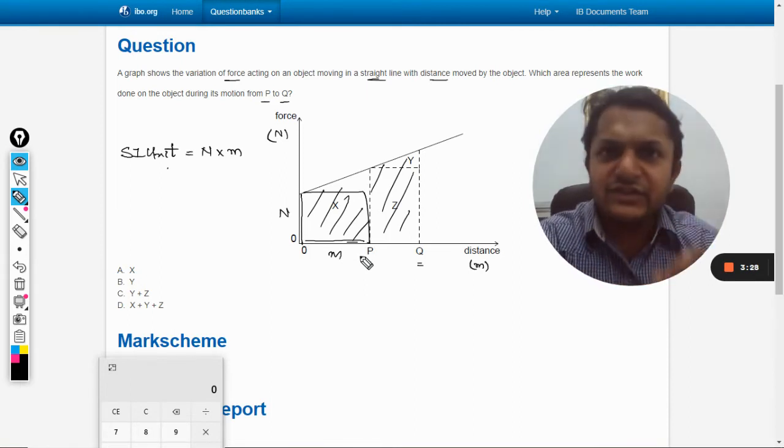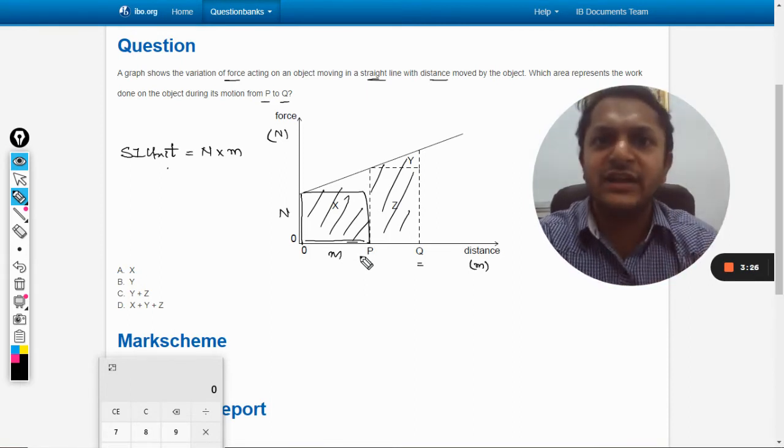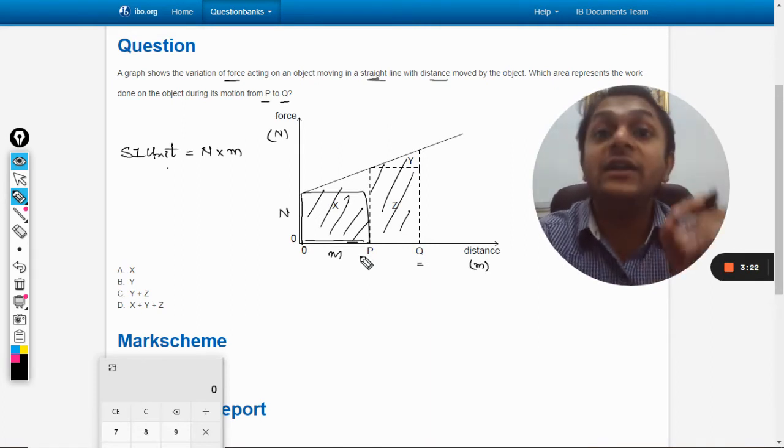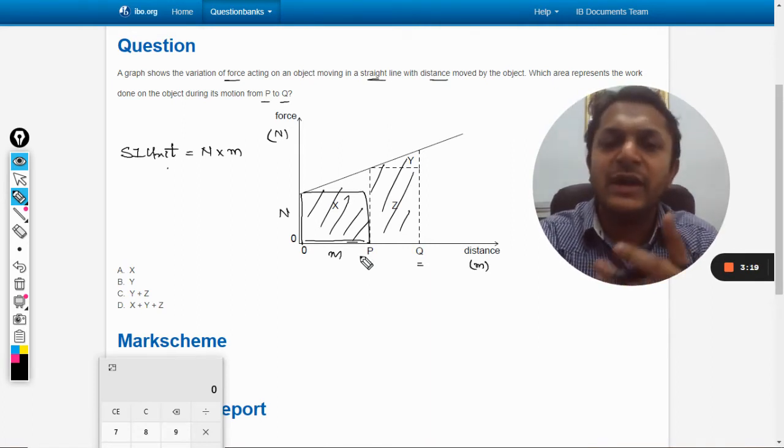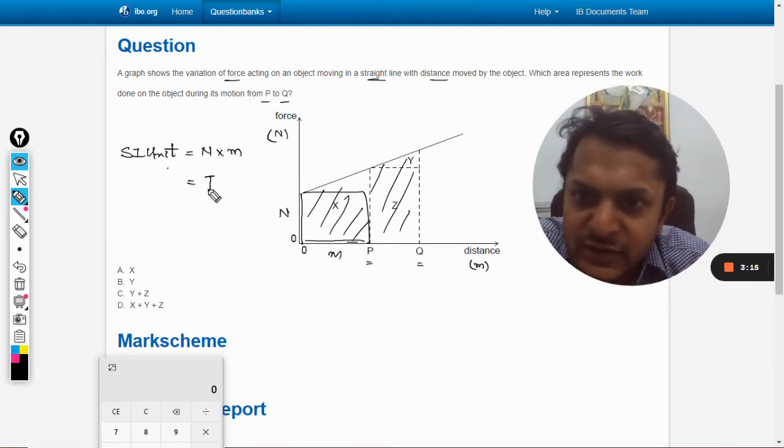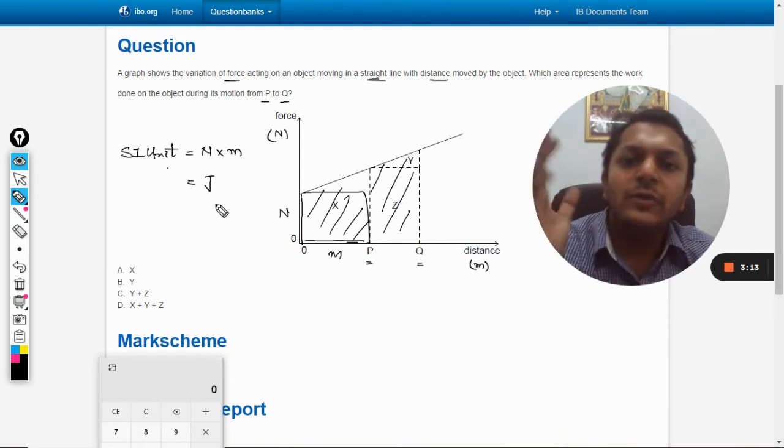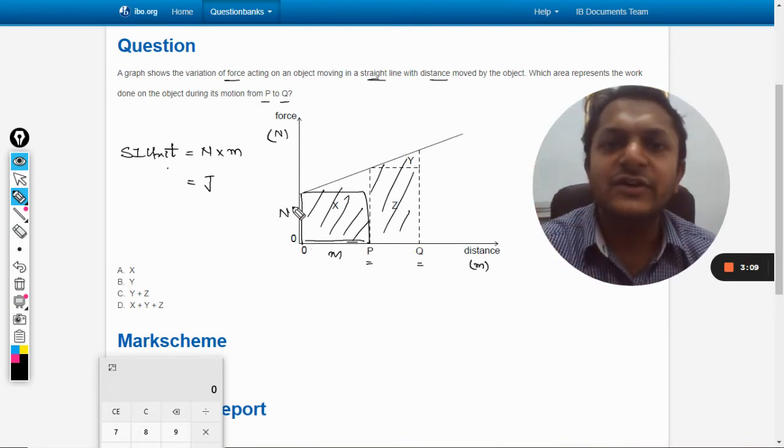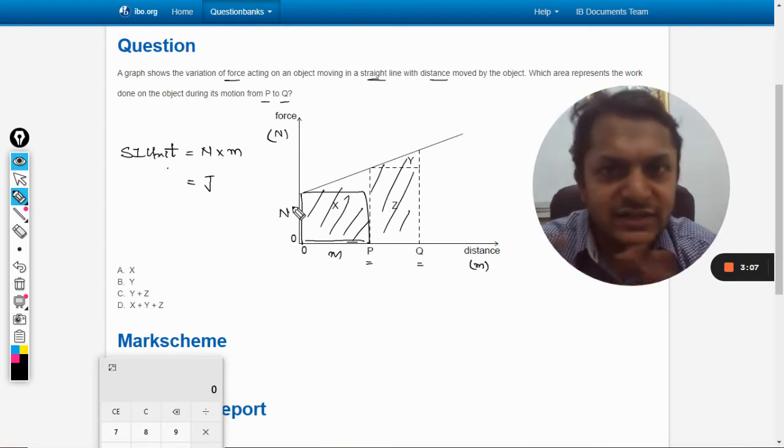What is newton meter? Which physical quantity is represented by newton meter? It is work or energy. Work and energy are the same thing, they are represented by joule. The SI unit is joule, so this newton meter is basically joule. So now we are sure that the area under the curve will give you the work done. Simple.